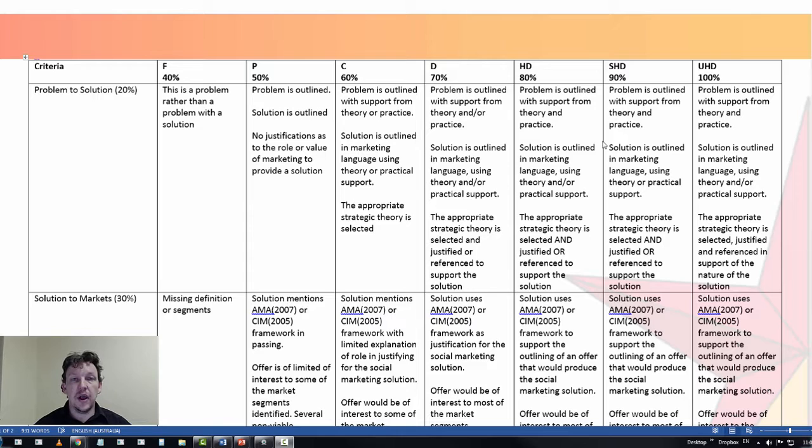But they also have a significant consequence. So the problem-to-solution portion of the marking criteria is designed to assess how well you go from presenting a social issue to presenting a social marketing solution to that issue. It's worth 20% of the overall paper. To max out that 20%, you want to be using support from theory and practice.